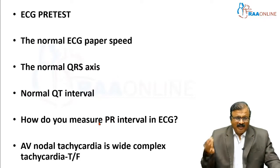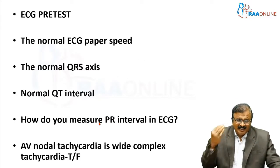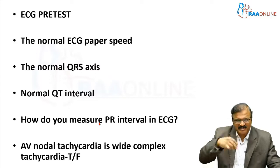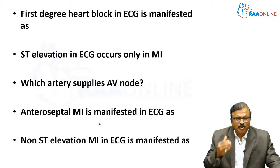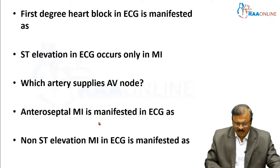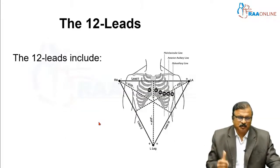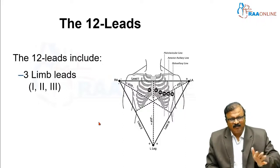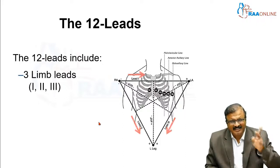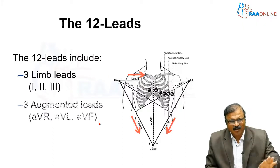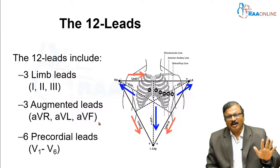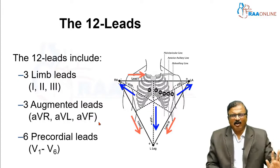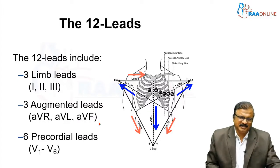We will learn ECG as fast as possible, and it should be useful for the beginner also. Regarding the 12 leads — we have 3 limb leads, augmented limb leads, and 6 precordial leads.